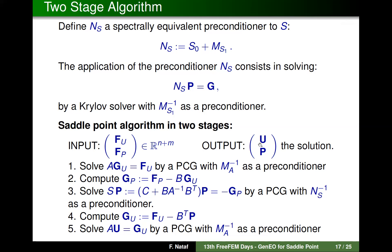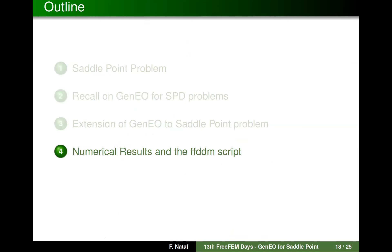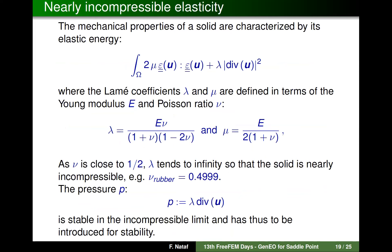The algorithm is: given a right-hand side, output velocity and pressure. First, eliminate the velocity by solving a linear system with A using the classical GenEO method. Then update the right-hand side for the pressure, solve a system with the Schur complement preconditioned by the defined matrix N_S, recover the velocity by updating the right-hand side for velocity, and solve one more problem for the velocity.